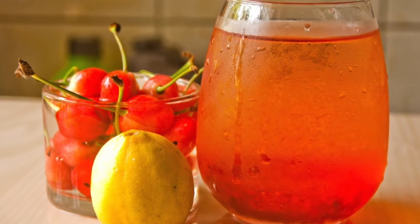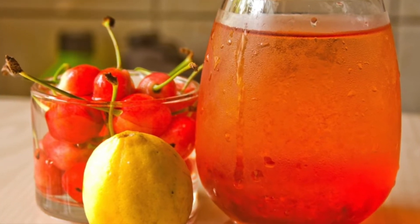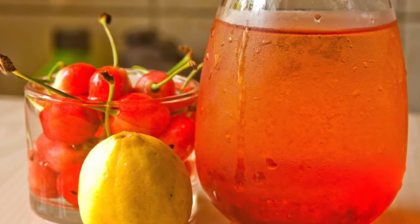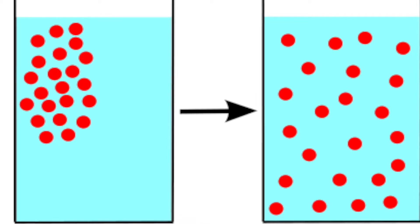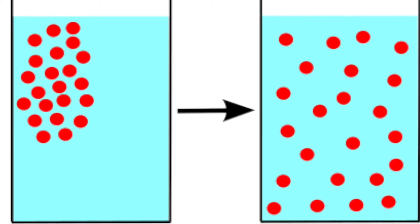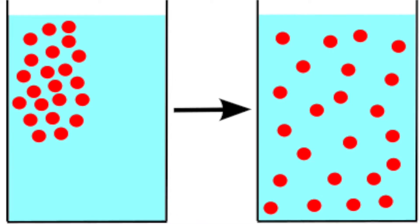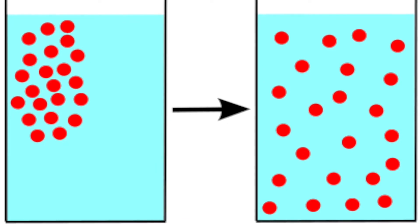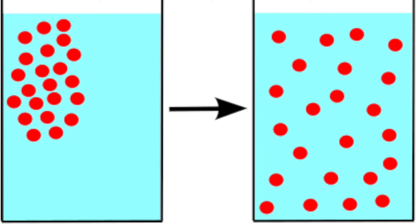This is Sam Sark and in this video we are looking at diffusion. First of all we need to look at what diffusion is. Diffusion is the spreading out of a liquid or a gas, or of any substance in a solvent. This results in the net movement of particles from an area of higher concentration to an area of lower concentration.